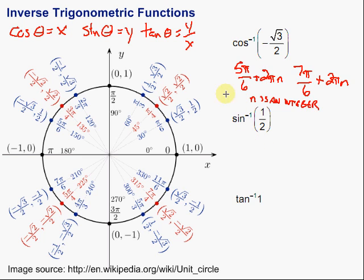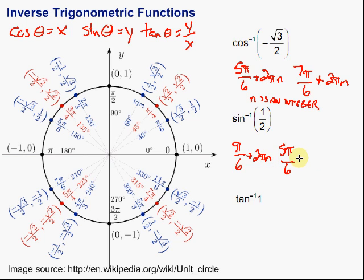Similarly, for 7π over 6, we're going to have plus 2π times n, which takes into account all of the rotations where I can end up at that particular point. For the next one, the inverse sine of 1/2 — remember, the sine is the y-coordinate — so I'm going to look through the y-coordinates on my unit circle to find where we have a y-coordinate that's 1/2. That gives us π over 6 and 5π over 6. I need to add 2π times n, where n is an integer, to take into account all those different rotations.